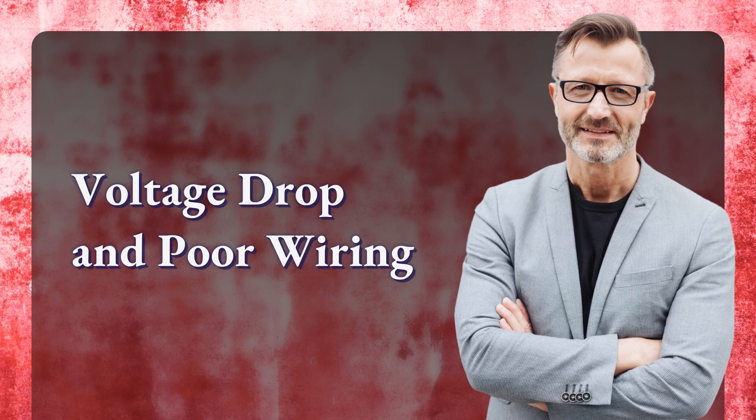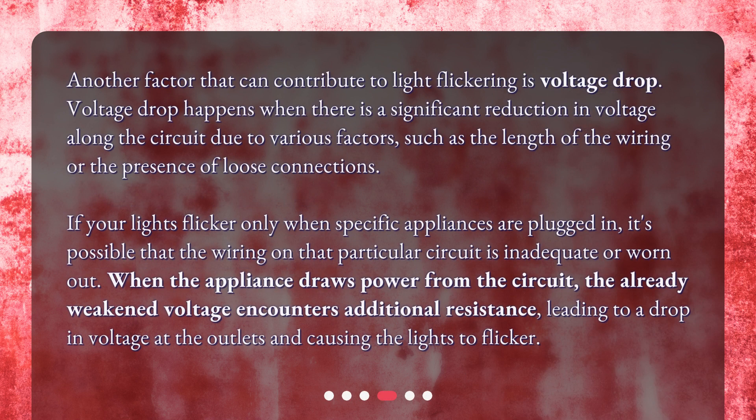Another factor that can contribute to light flickering is voltage drop. Voltage drop happens when there is a significant reduction in voltage along the circuit due to factors such as the length of the wiring or the presence of loose connections. If your lights flicker only when specific appliances are plugged in, it's possible that the wiring on that circuit is inadequate or worn out. When the appliance draws power, the already weakened voltage encounters additional resistance, causing a drop in voltage at the outlets and making the lights flicker.